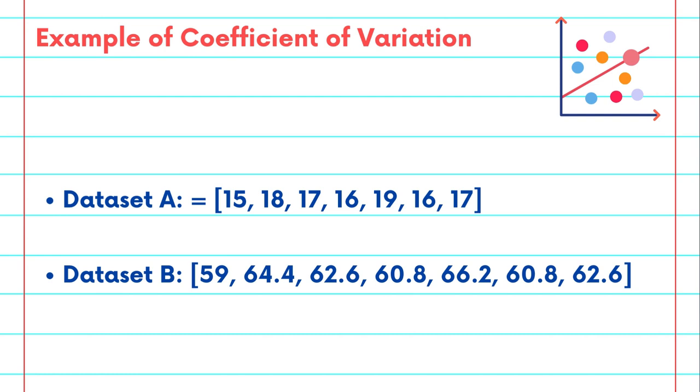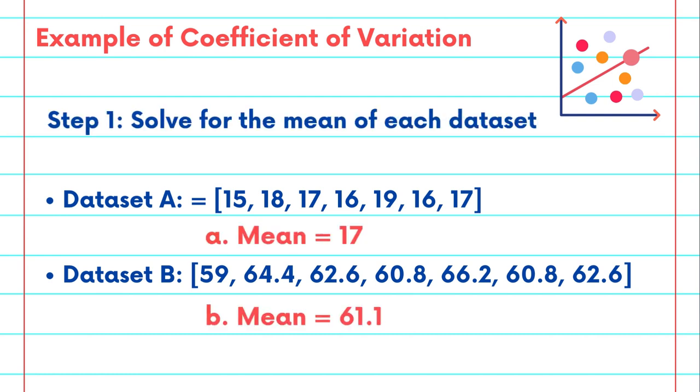How would we solve for the Coefficient of Variation? First, let's find the means of these two datasets. Dataset A has a mean of 17, while Dataset B has a mean of 61.1.